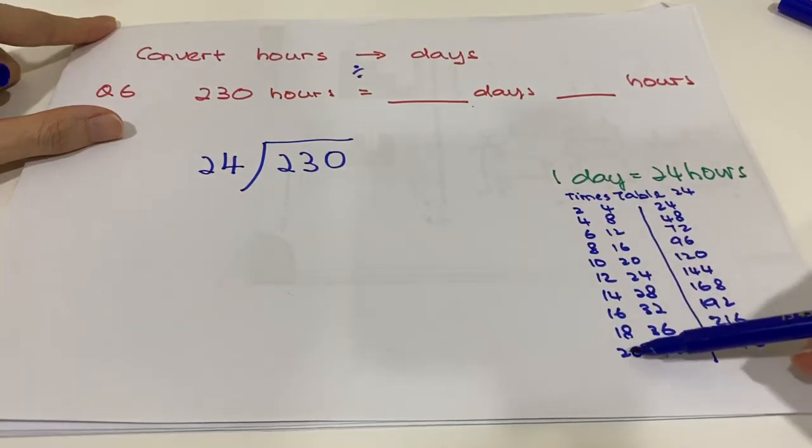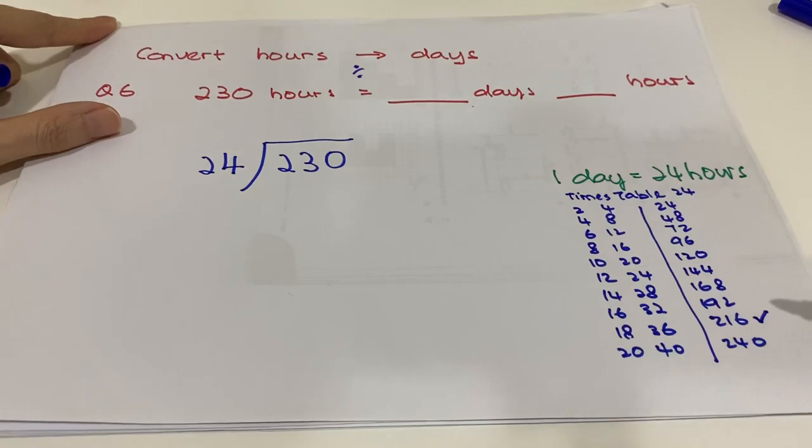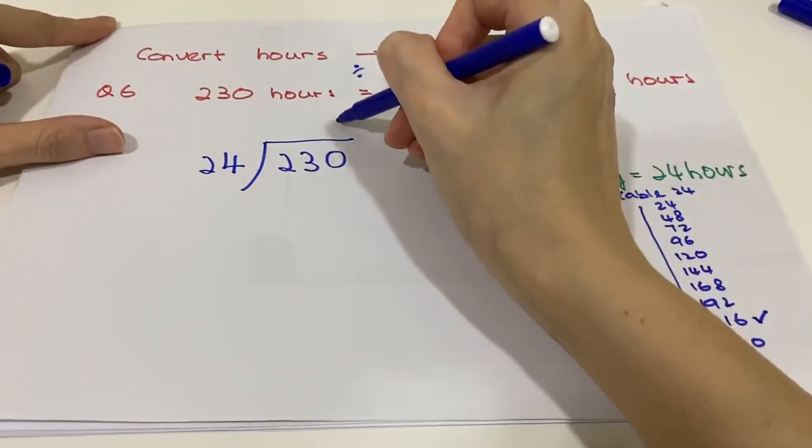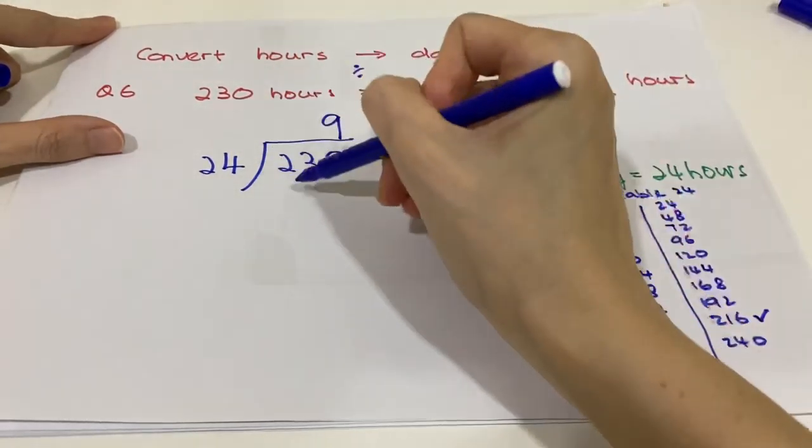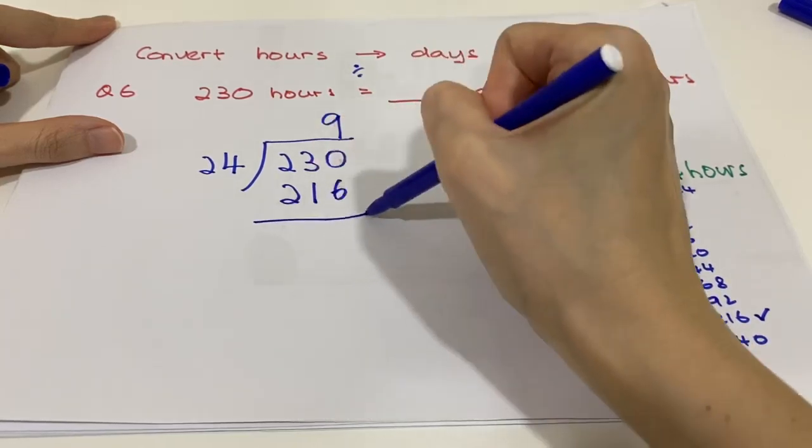So we know that this is 10, this is 9. 9 times 24, we will get 216. We cannot choose 240 because it is too much, so we will choose 9. 9 times 24 is 216, so the balance will be 14.